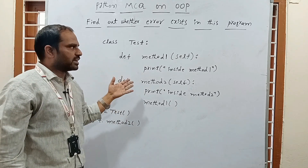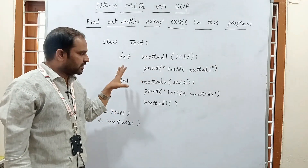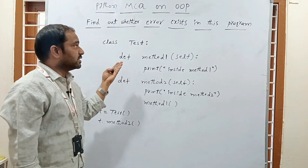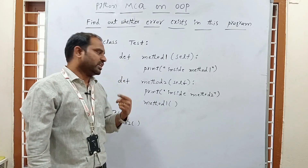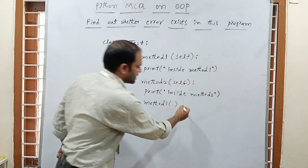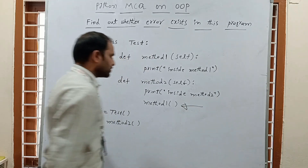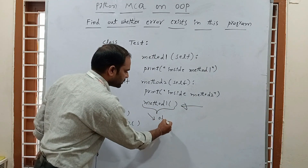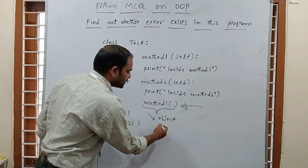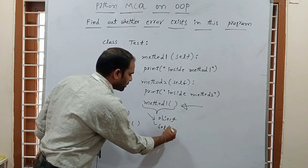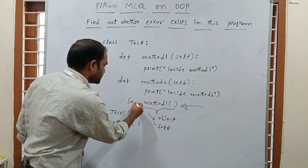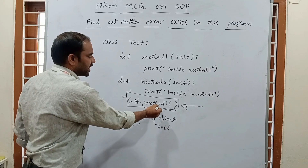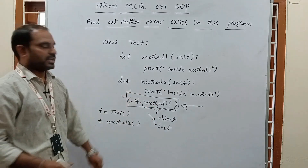If your answer is that there exists an error, you are correct. The error occurs because method_one is being called without referring to any object — without using 'self'. If we use self.method_one() inside method_two, then only that method can be called correctly. Otherwise it will raise an error.